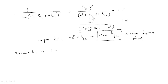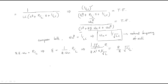Comparing the s-coefficient: 2ζωn = R/L. Substituting ωn = 1/√(LC), we get ζ = (R/L) · (1 / 2ωn) = (R/2) · √(C/L). Therefore the damping ratio ζ = (R/2)·√(C/L). This value decreases the oscillations, which is why it is called the damping ratio.